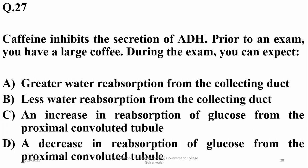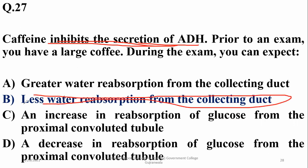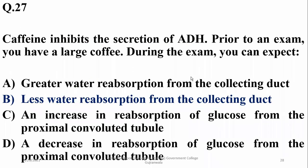Caffeine inhibits the secretion of ADH. Prior to an exam if you drink a large coffee, you are inhibiting the release of ADH and therefore inhibiting water reabsorption. During the exam you can expect less water reabsorption from the collecting duct due to less ADH, resulting in more urine production. So beta is the right option.